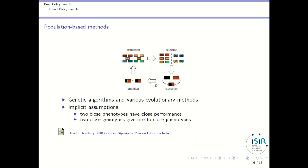In genetic algorithms it is not directly individuals that you cross over and mutate — you have genotypes and a function to transform a genotype into an individual, and it is through the genotypes that you perform crossover and mutations. There are two assumptions: first, that two close genotypes will give rise to two close phenotypes or individuals, and second, that two close individuals have a close performance. If you want to know more, you can read the classical book from David Goldberg.